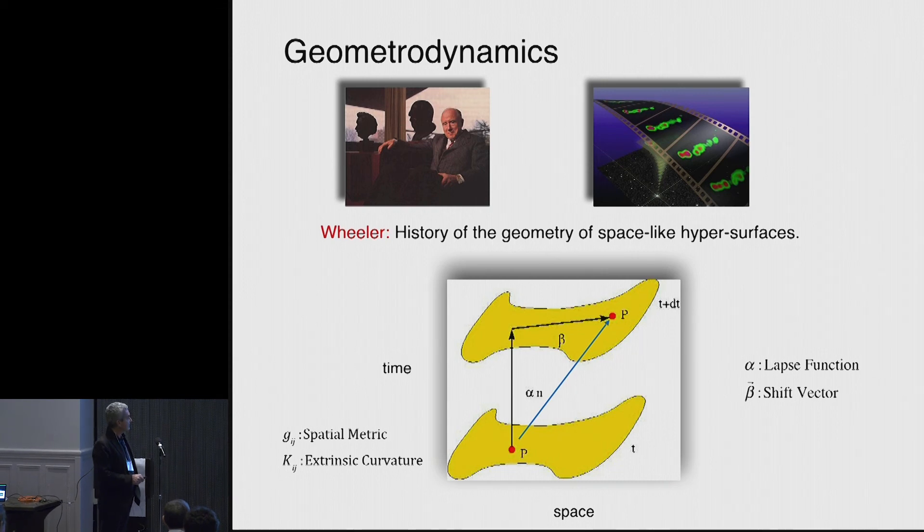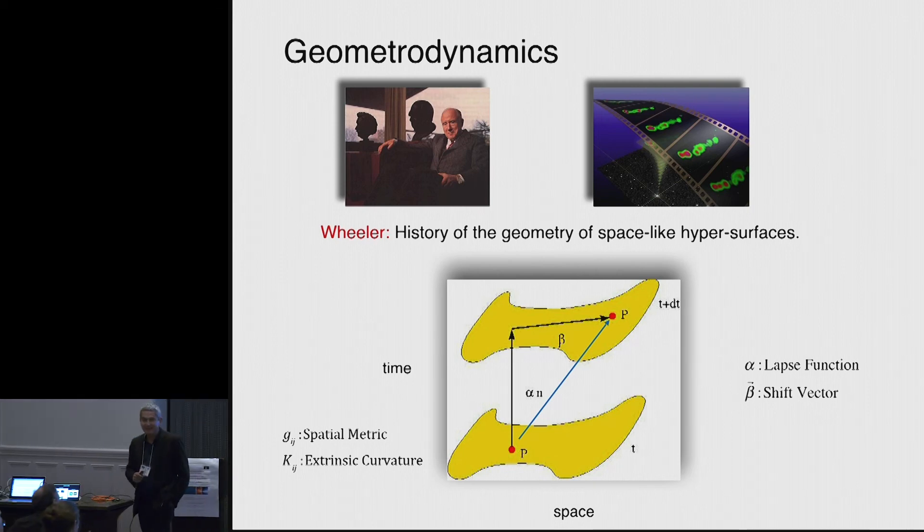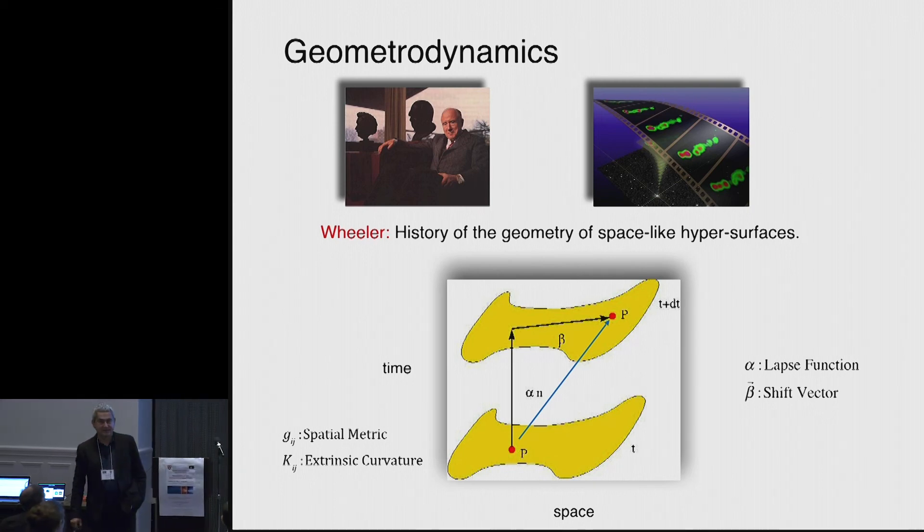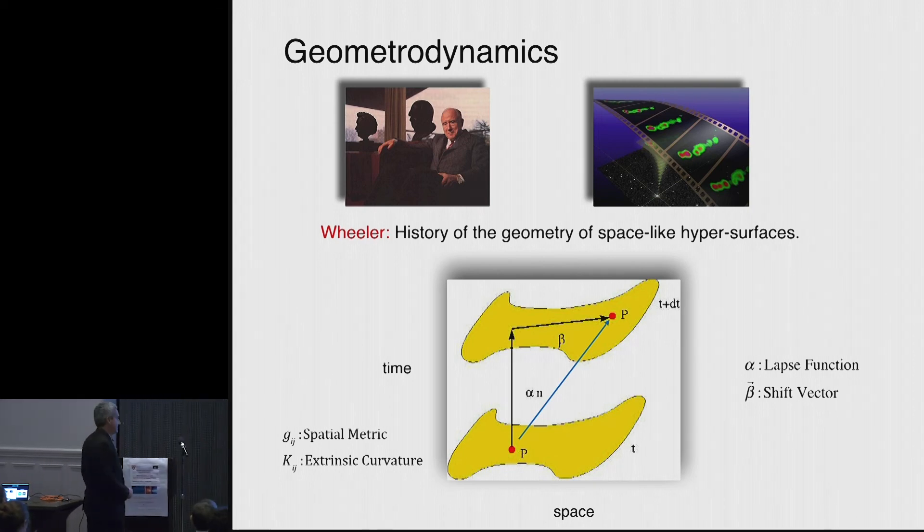That is the time that elapses from one surface to the next one. And we also have this shift vector beta that tells us where a point p is mapped in the next time slice. And that was critical for the success of the simulations. And I'll mention in a second why.